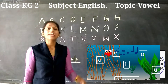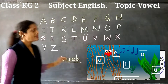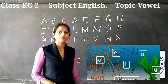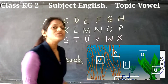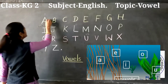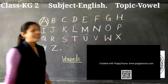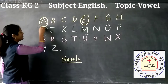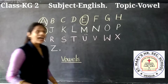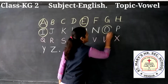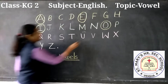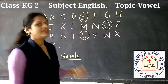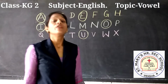Here, we have 26 alphabets. From these, we have 5 vowels. Let's find out: A, E, I, O, and U. These letters are known as vowels.